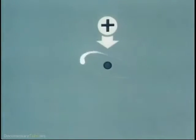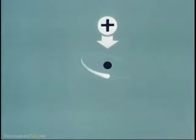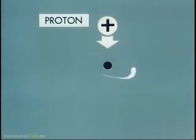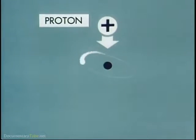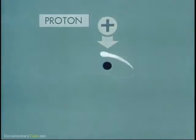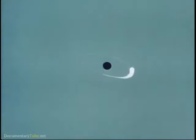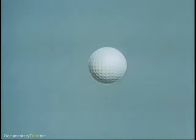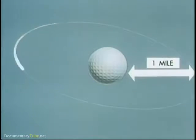The nucleus of a hydrogen atom is made up of a single particle with a positive electrical charge and is known as a proton. To re-emphasize the sub-microscopic nature of our subject, if we could increase the size of the nucleus proton to that of a golf ball, the route of the electron would be about a mile away.